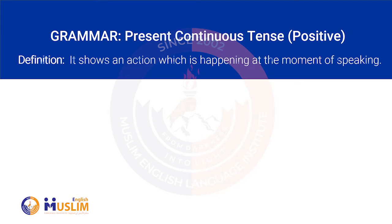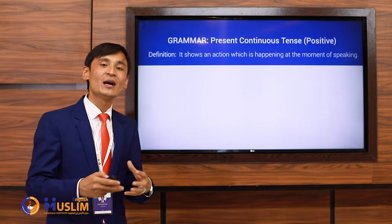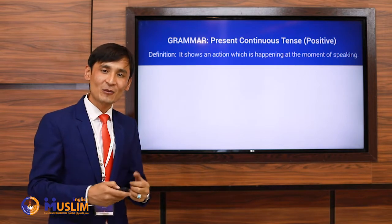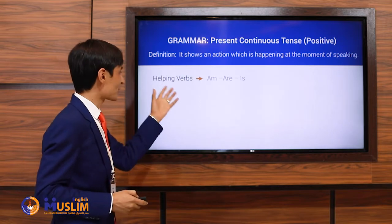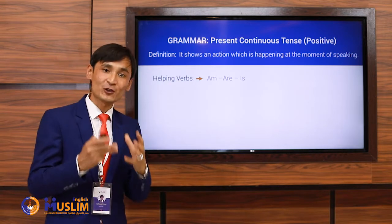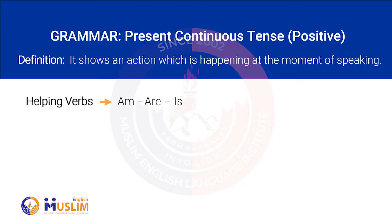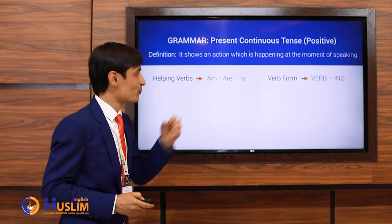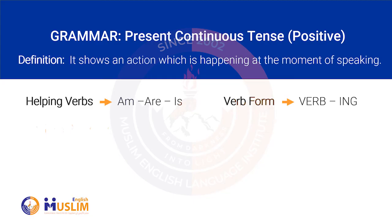Present Continuous shows an action which is happening at the moment of speaking. The helping words for this tense are: am, are, and is. The word form used is the verb with -ing ending.